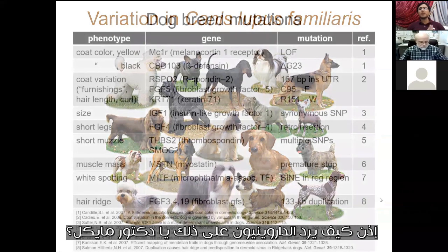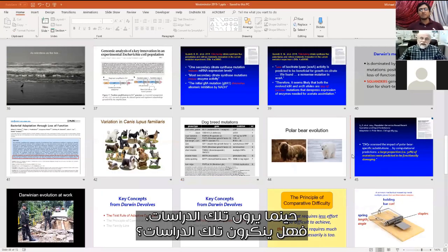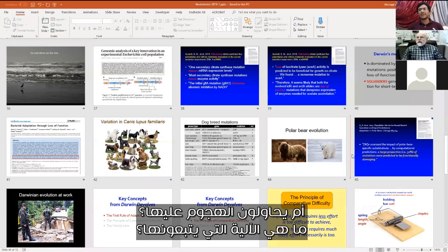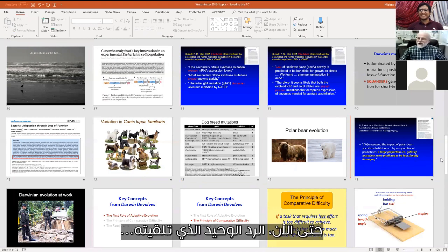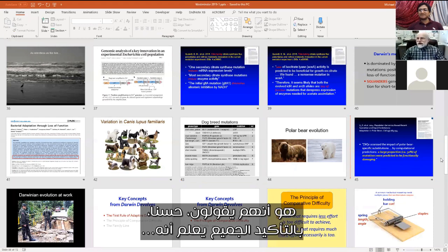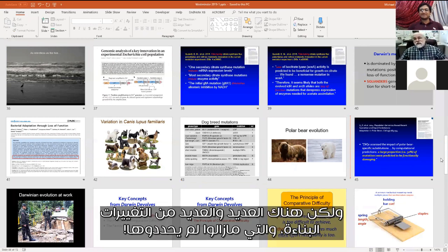How does a Darwinist respond to these studies? They do not deny them. So far the only response I've gotten is that they say, well, sure, everybody knows that sometimes getting rid of a gene will help a species — but there are also lots and lots of constructive changes, which they have yet to point to.